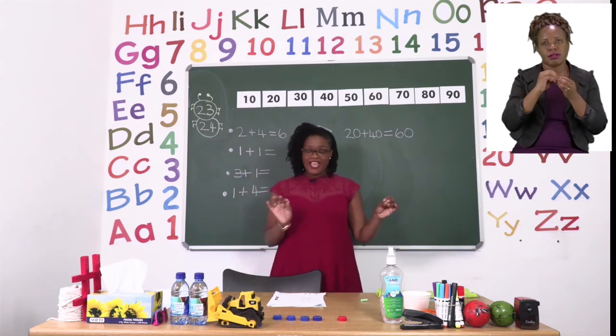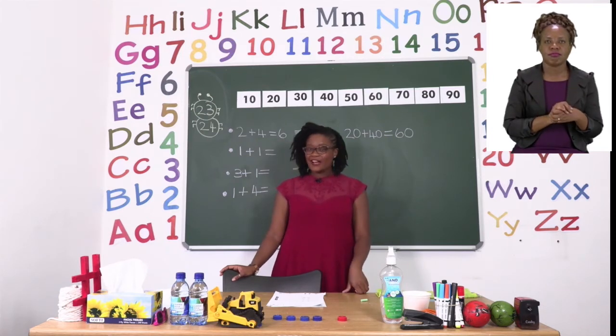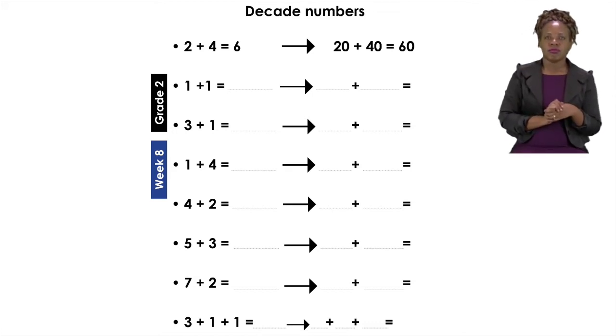So it is going to be our job to change the numbers that we can see into decade numbers. Let's take a look at our exercise. Now the first one that they have given us as an example is very clear. The sum starts as 2 plus 4 equals 6. And then there's an arrow pointing to the new sum where the numbers have been changed to decade numbers. So now our sum reads 20 plus 40 equals 60. It is now going to be our job to change the ones that we can see into decade numbers.